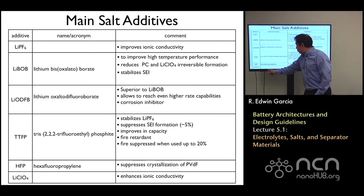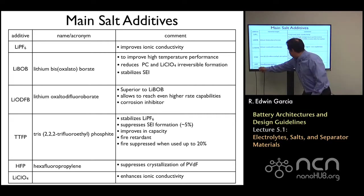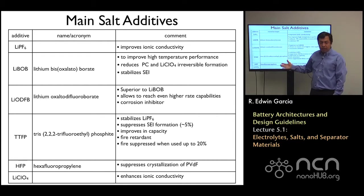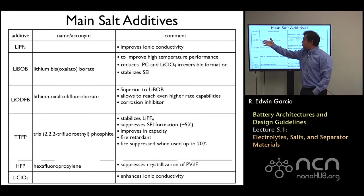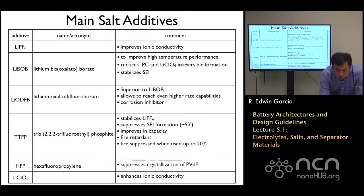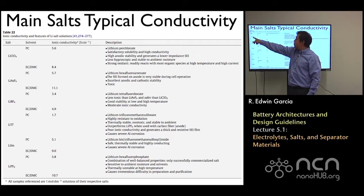Then we have hexafluoropropylene, which suppresses the crystallization of PVDF. And you have LiClO4, which enhances the ionic conductivity. Which one you should use depends on the specific application. Their conductivity will have an impact, and each of these should not be used randomly. Typically, what people do is they pick a specific salt and a combination of those salts with solvent.